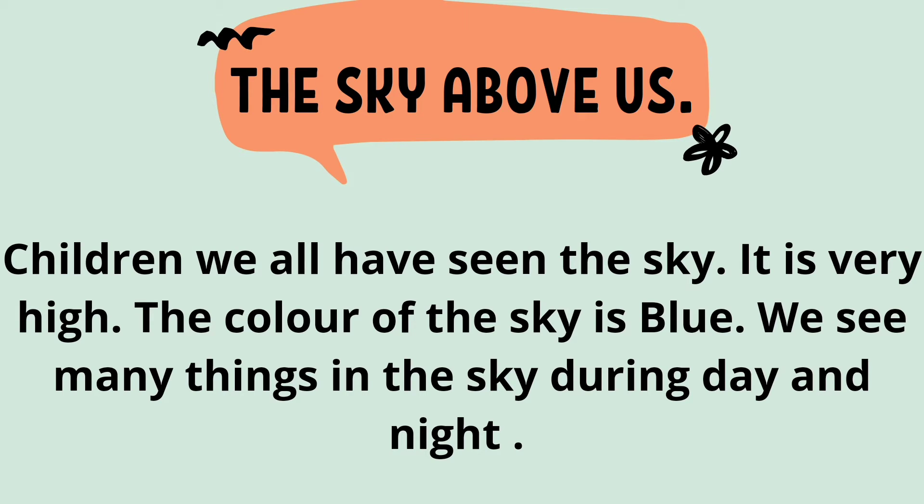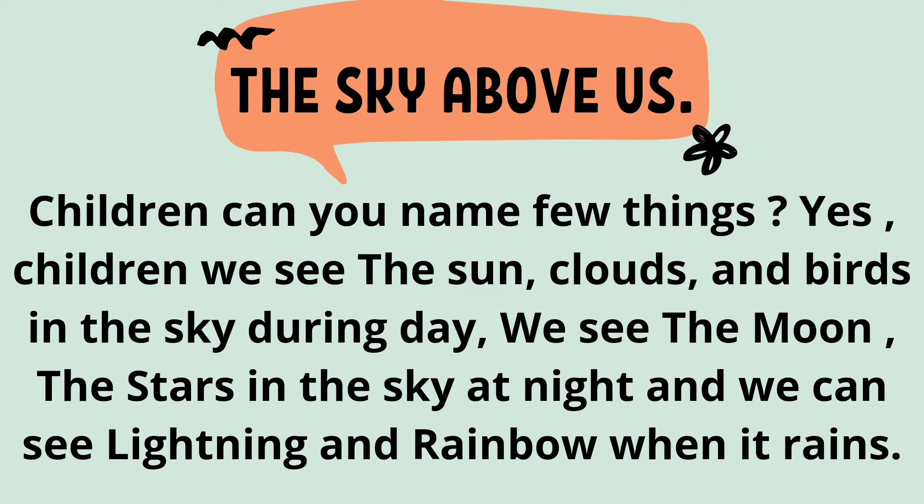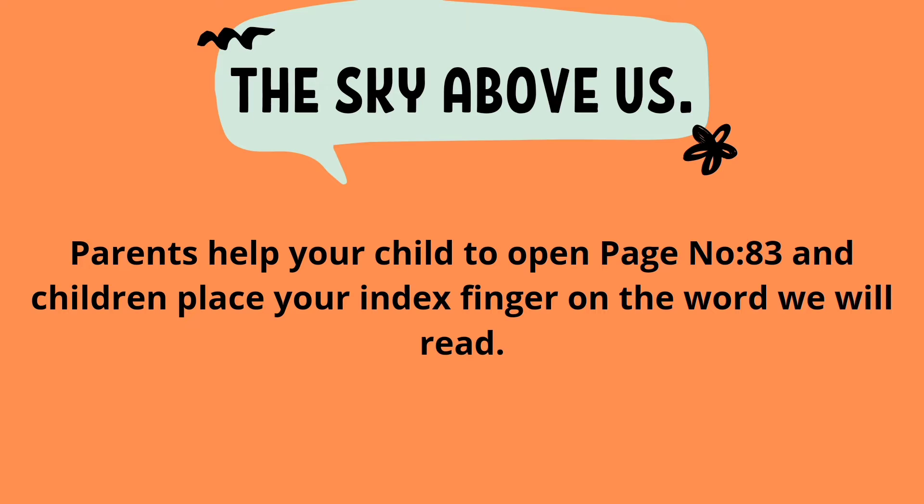Children, we all have seen the sky. It is very high. The color of the sky is blue. We see many things in the sky during day and night. We see the sun, clouds, and birds in the sky during day. We see the moon and the stars in the sky at night. And we can see lightning and rainbow when it rains.